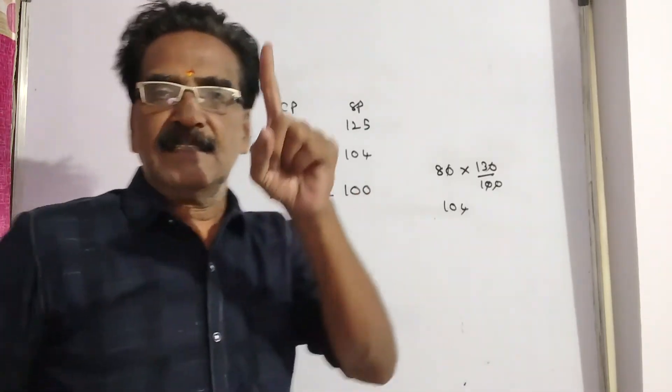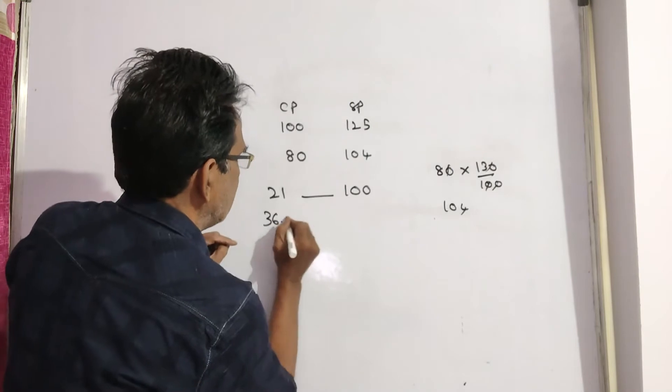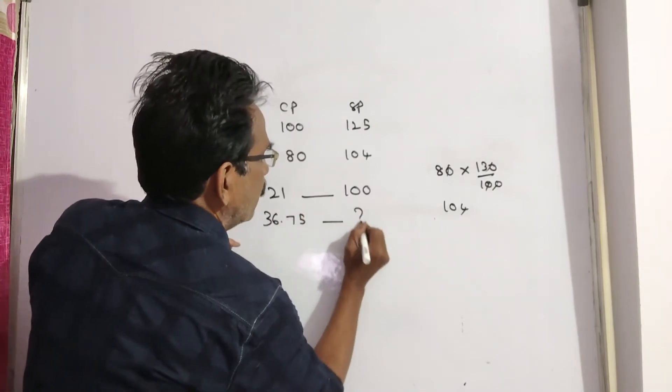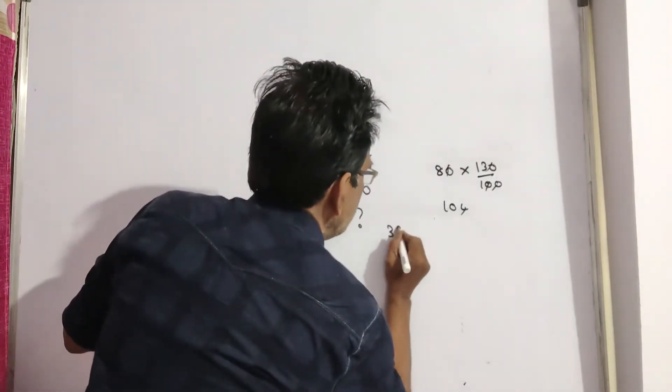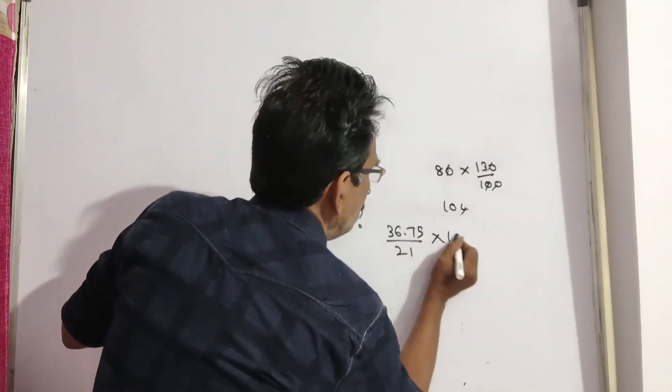Now it is given that 36 rupees 75 pesos are less. If 36 rupees 75 pesos are less, then the cost price will be 36.75 by 21 into 100,